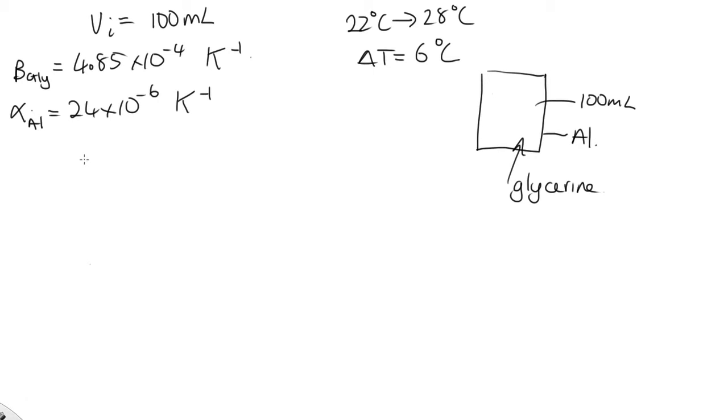OK, so let's work out the change in volume of each of these. The change in volume of the aluminum is equal to 3 alpha times the initial volume of the aluminum times the change in temperature. So this is 3 times 24 times 10 to the minus 6 times 100 times 6. And solving that on the calculator, we end up with 0.0432 milliliters. That's the change. The units in milliliters is this was in milliliters.